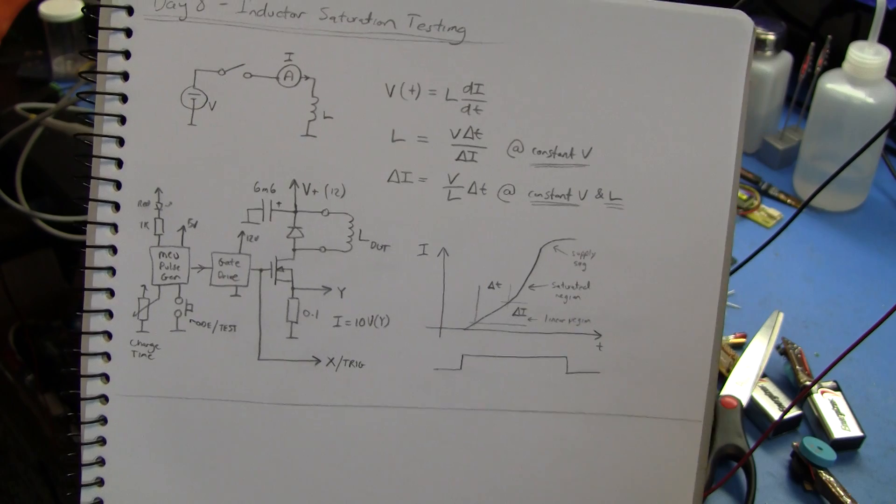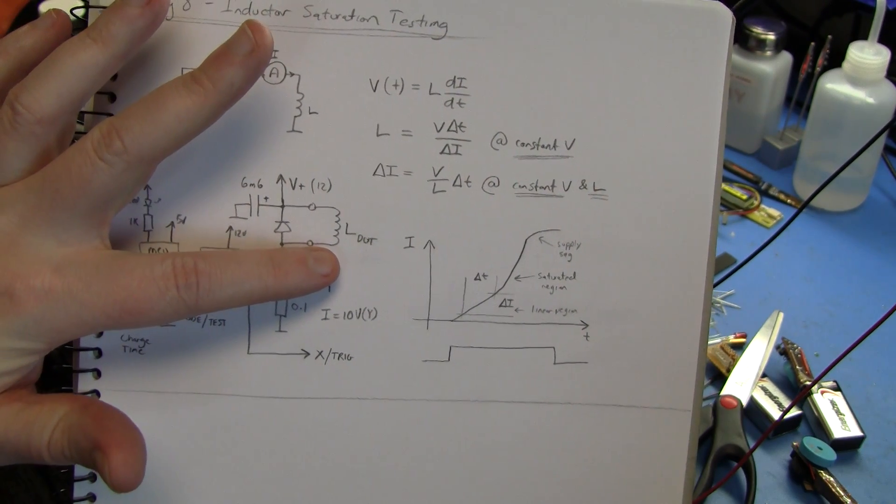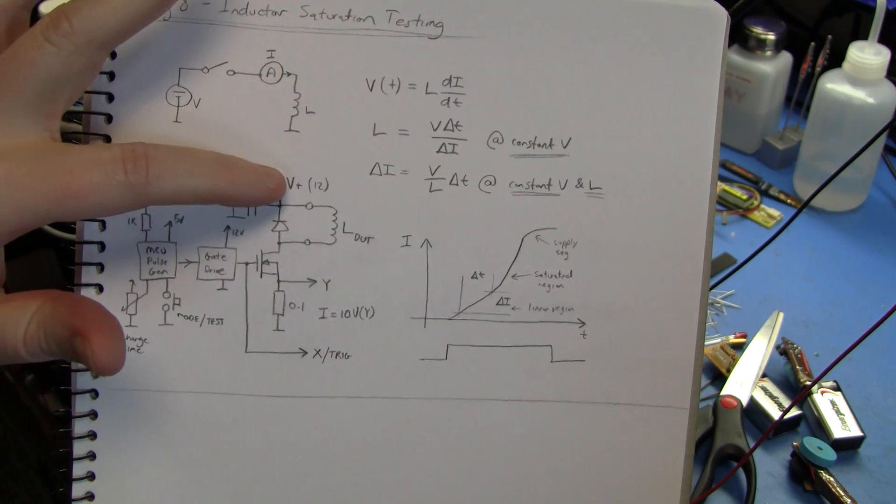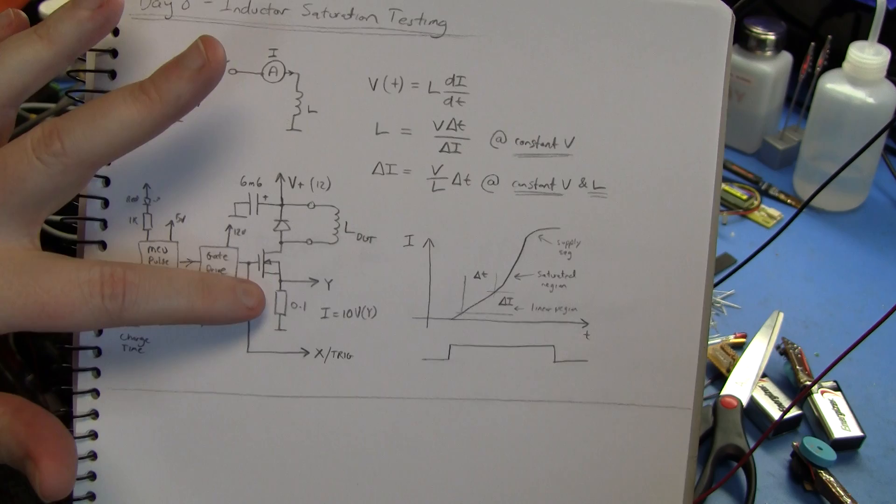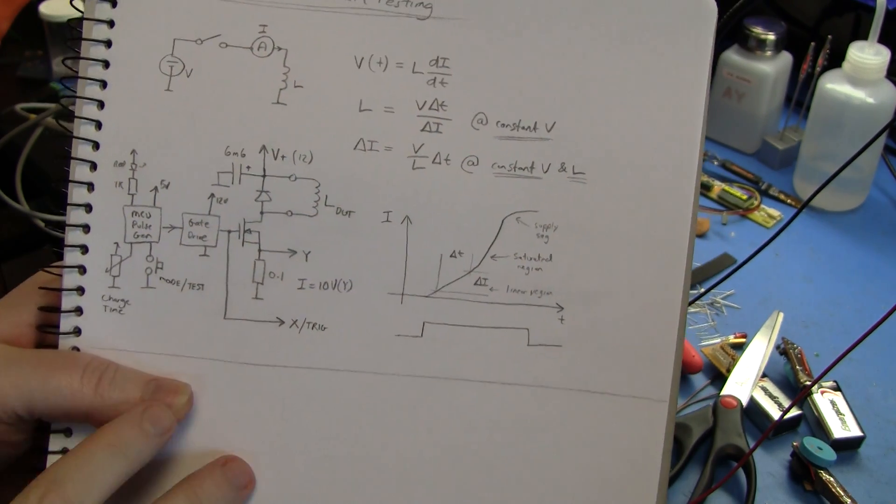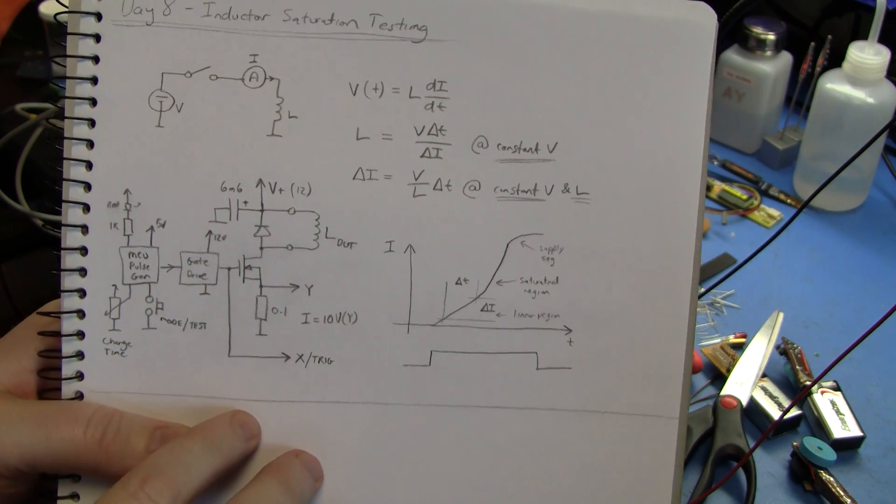The maximum current that you can test an inductor to in this setup is obviously the ohmic resistance of the inductor winding limits the current at maximum so you've got some set voltage which you can crank up until your switch basically blows up. You know, V equals IR, I equals V on R, simple Ohm's law.